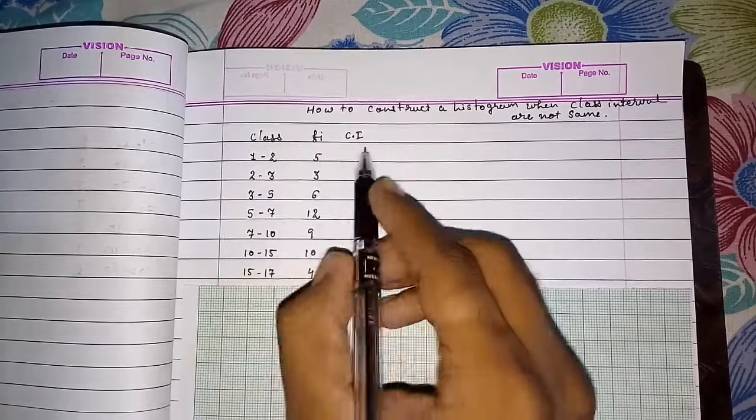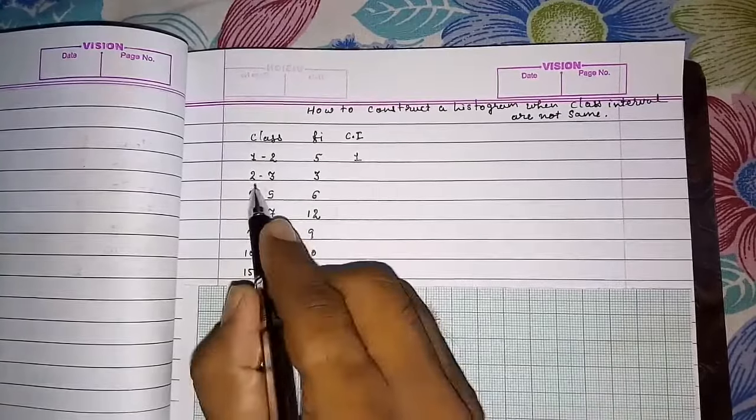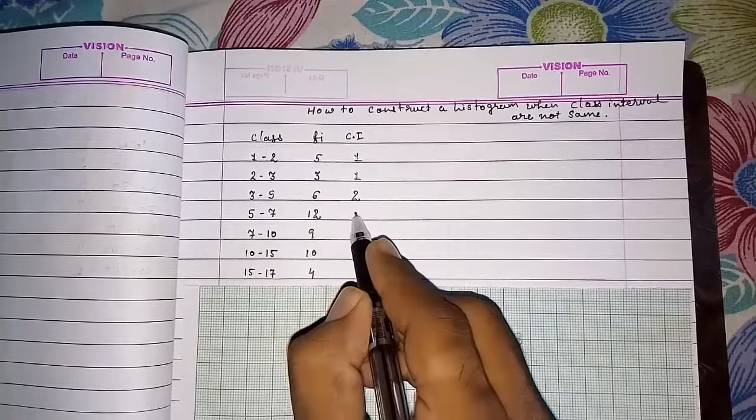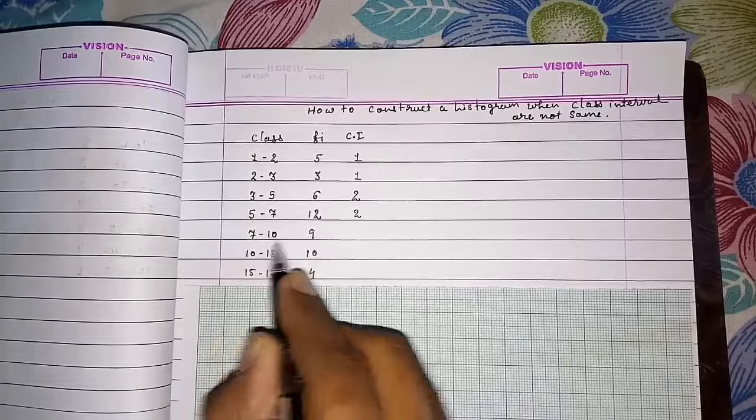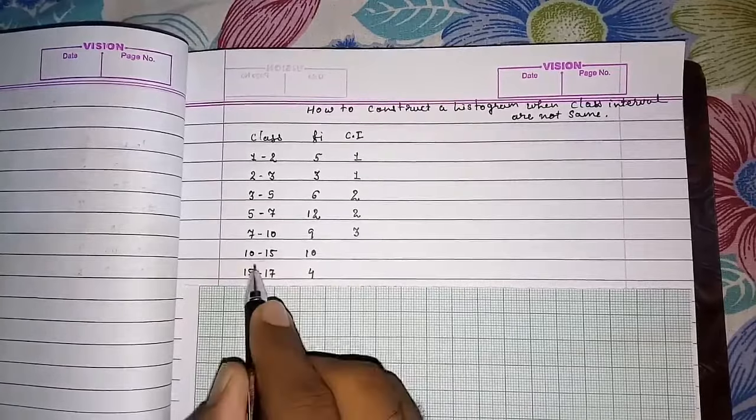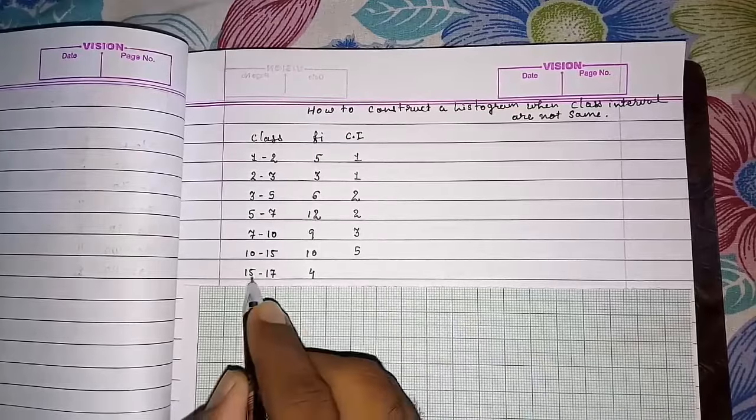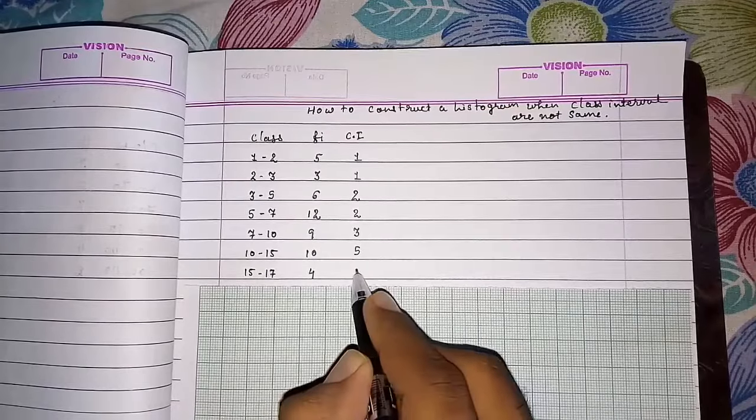Now we can see 1 to 2, so gap of 1, again 1 class width, then 2, then 2, 5 to 7 is 2, 7 to 10 is 3, 10 to 15 is 5 numbers, then 15 to 17 is 2 numbers.